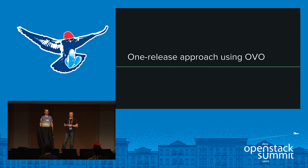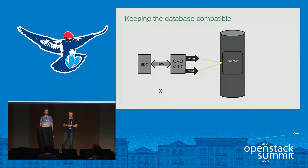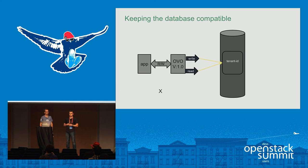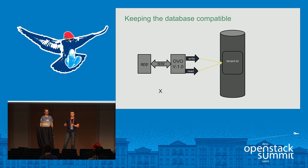When talking about the one-release approach for rolling schema upgrades, we can address it with versioned objects. Take the tenant ID example from Neutron: currently in Neutron we have renamed tenant_id to project_id. This scenario will show how we should have done it if we had Oslo Versioned Objects (OVO) in place — which we don't have right now in Neutron, so not all data is accessed using OVO.